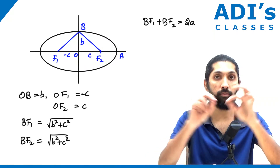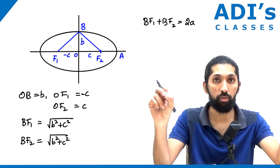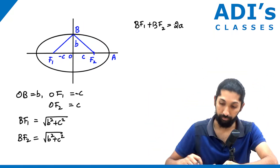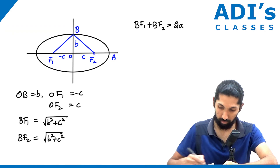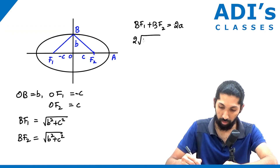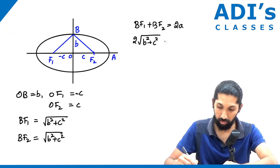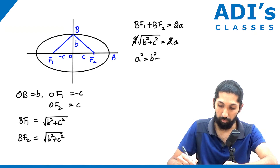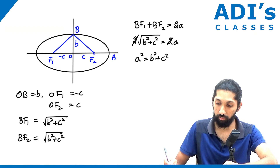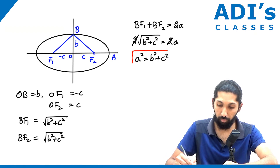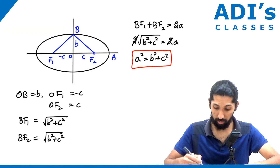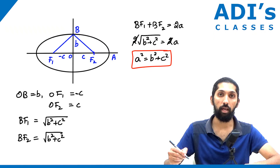2a is the length of the major axis, which always equals BF1 + BF2 — that is the definition of an ellipse. So BF1 gives us 2·√(b² + c²) = 2a. The 2s cancel, so you get a² = b² + c². This is one of the important relations: a² = b² + c².